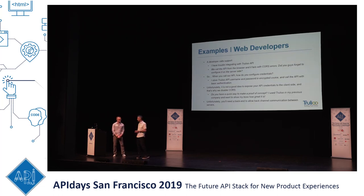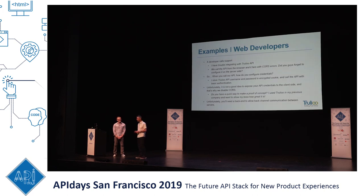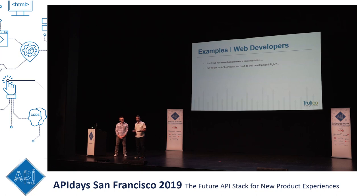They respond: 'Do you have a quick proof of concept I can use? I used Trulio before at my previous role and I'm bringing it into my new company — I want to show how awesome it is to justify my big salary.' Unfortunately, you will need to implement a backend. But we're talking about a frontend engineer here who doesn't like to implement anything in the backend. So if only we had some kind of a basic implementation. But we're an API company — we don't do web development.